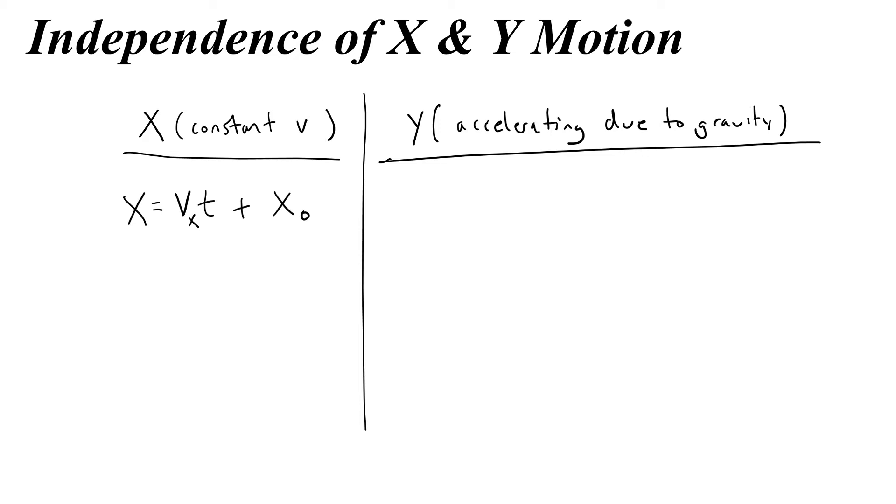Now I'm going to change some of my letters so that I'm making sure to note that these are y not x variables. So we'll start with velocity. Instead of saying v, I'm going to say vy because only the y component of velocity is affected.